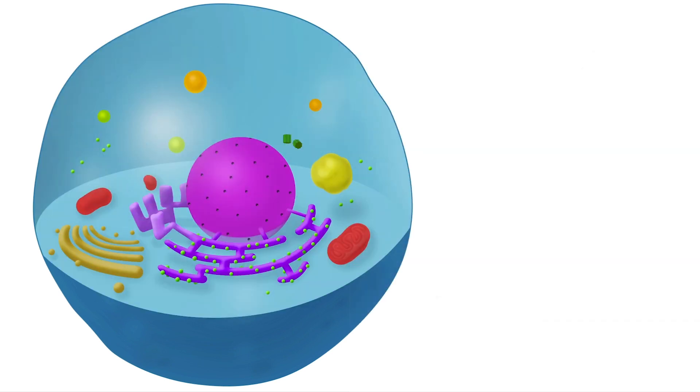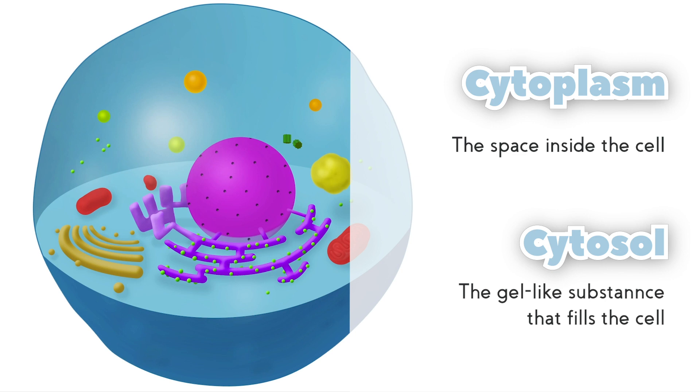The space inside the cell is called a cytoplasm, and it's filled with organelles and a gel-like substance called cytosol.